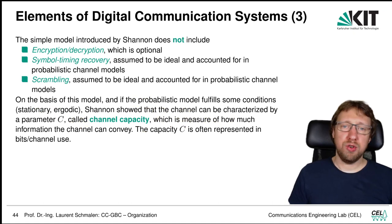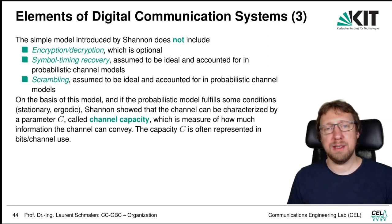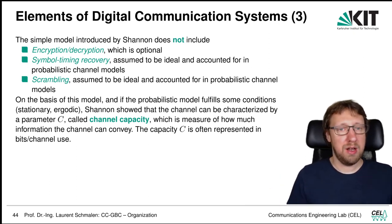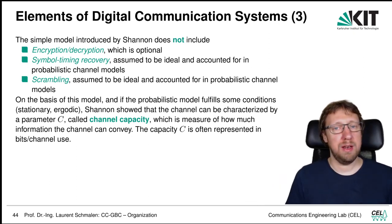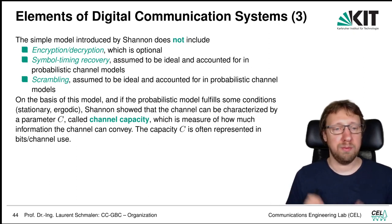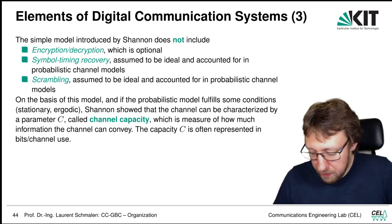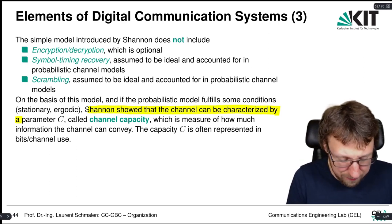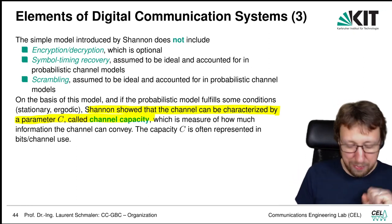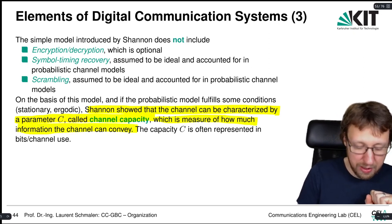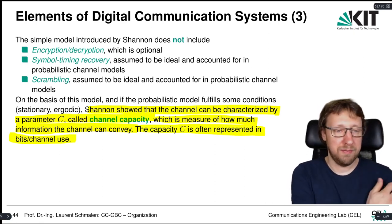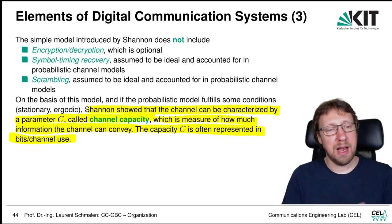Shannon's model is simplistic — it does not include encryption/decryption, symbol timing recovery, synchronization (assumed ideal in channel models), or line coding/scrambling. Based on this model, Shannon introduced channel capacity: a parameter characterizing the channel as a measure of how much information we can convey over it. Capacity is often represented in bits per channel use — meaning how many bits can be transmitted each time the channel is used.